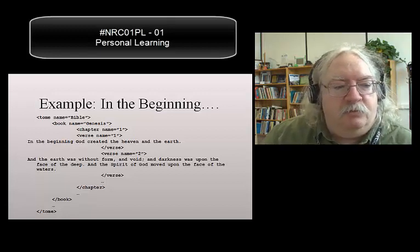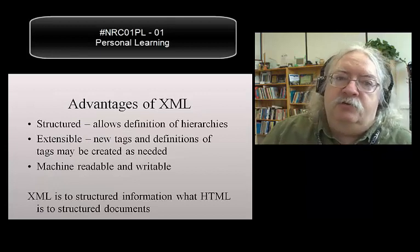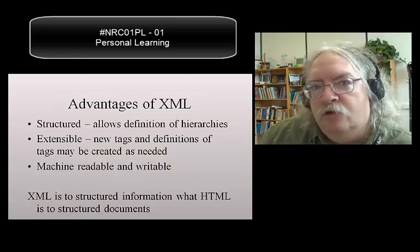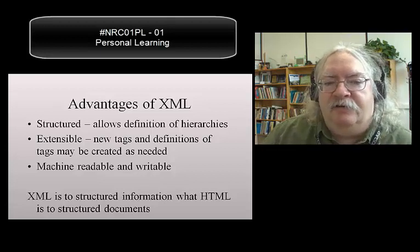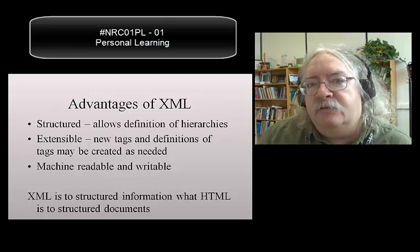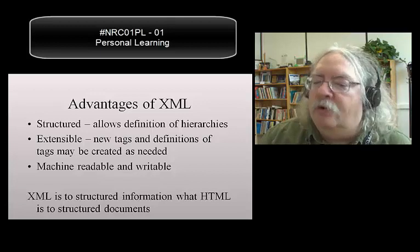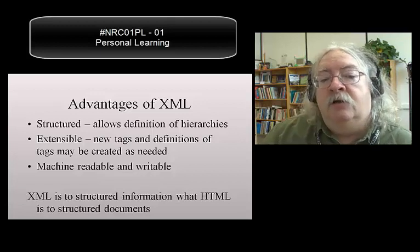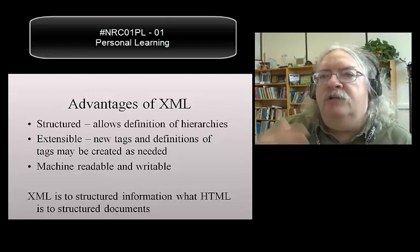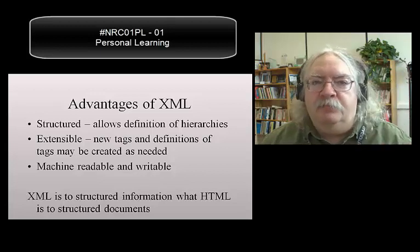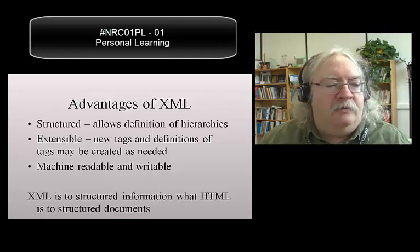So why would we do it this way? Consider the advantages. It's structured, so it allows us to define courses, course modules, units, and even pages as a definition of hierarchies. It's extensible — we could add new tags and call something a chapter, a unit, a module, or whatever we wanted. But best of all, it was machine-readable and machine-writable. So you could put this on the internet, and you could have computers look them up, organize them, and do all kinds of things to them automatically.